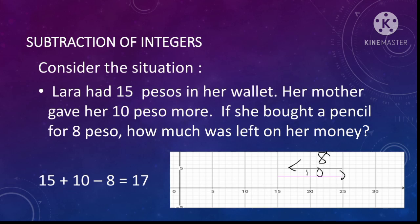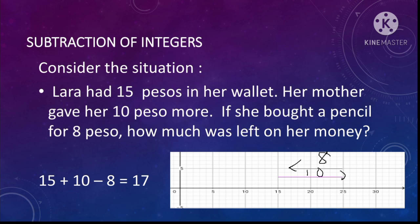Observe the illustration. Laura had 15 pesos in her wallet, so from 0 count to 15. Her mother gave her 10 pesos more, so the arrow adds 10 to the right. She bought a pencil for 8 pesos, so from the total of her money — 25 — we subtract 8, and the arrow moves to the left.